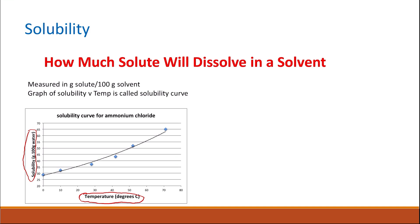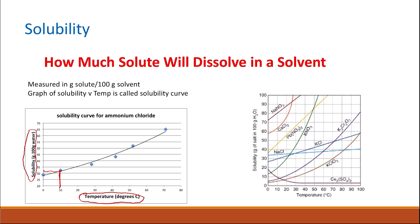For example, at 10 degrees, you can see that the solubility is around 32 or 33 grams per 100 grams of water. In this graph, the solubility increases with the increase in temperature — as the temperature goes up, the solubility increases. These are the solubility curves of different solutes, and you can see that the solubility curve changes depending on the nature of the solute at different temperatures.